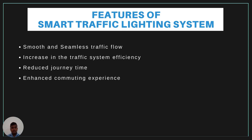Features. So what are the features of the Smart Traffic Lighting System? The Smart Traffic Lighting System is an advanced system of the 21st century. It provides smooth and seamless traffic flow, increased traffic system efficiency, reduced journey time, and enhanced community experience. These are the main features of the Smart Traffic Lighting System.